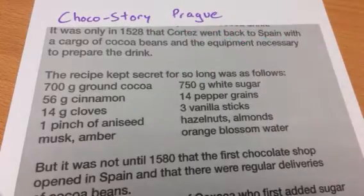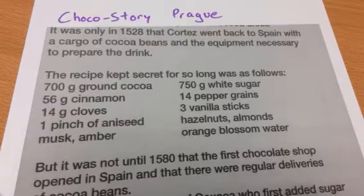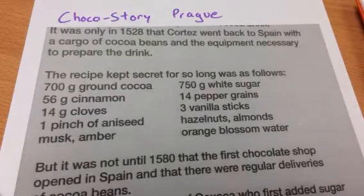700 grams of cocoa, 56 cinnamon, cloves, white sugar, pepper, and so on. As soon as I saw the recipe, I thought a very common GCSE question, especially in foundation, is looking at the amounts given.